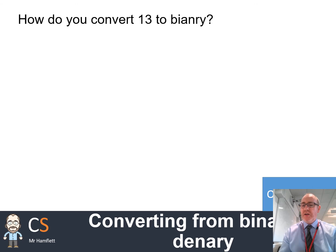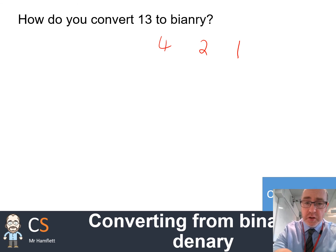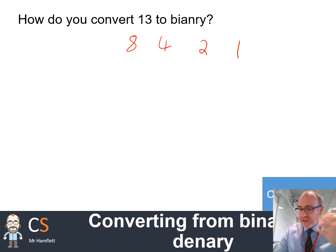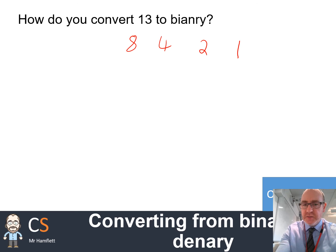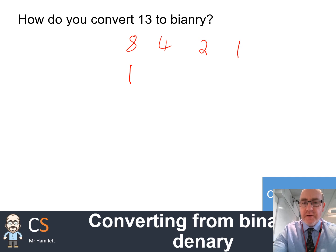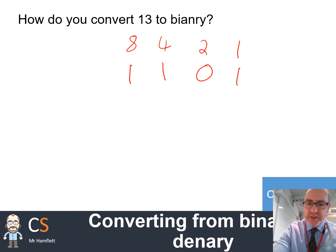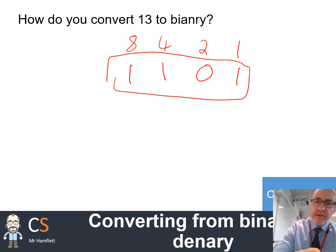How do we turn 13 into binary? Exactly the same process. Start with 1, 2, 4, and 8. Work out which numbers you need to add up to get to 13. Start on the left — 8 is less than 13, so we definitely need an 8. Subtract 8 from 13, that leaves 5. Now to get 5: add a 4, which gives 12 so far, and we need 1 more. We don't need a 2 because that would give too much. So we need 8, 4, and 1 — and that is the binary for 13.